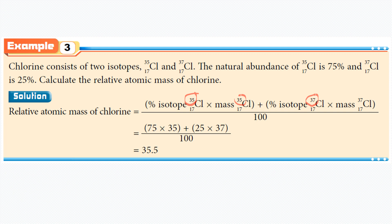The percentage of chlorine-35 is 75% times the relative atomic mass of 35 — the nucleon number is also the relative mass — plus the percentage of chlorine-37, which is 25%, times the relative mass of 37. Calculating this gives a relative atomic mass of chlorine equal to 35.5.